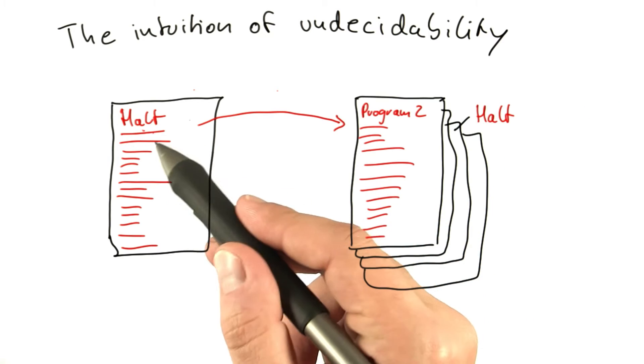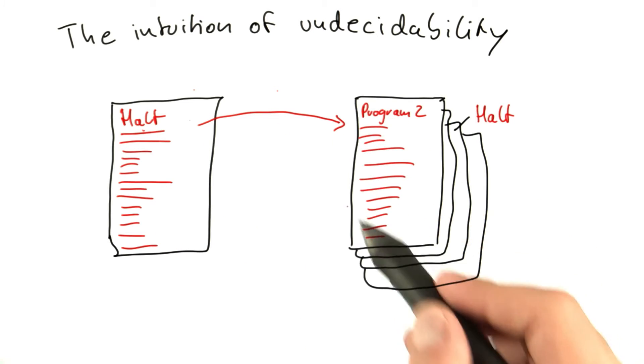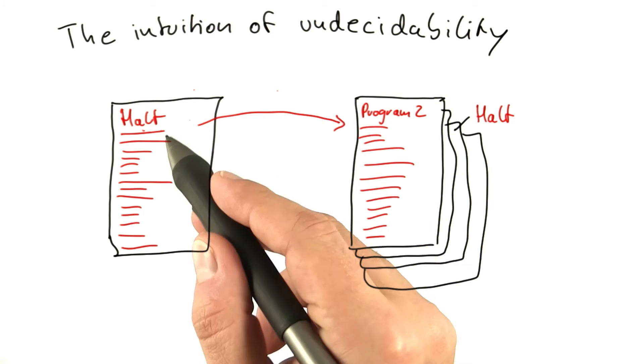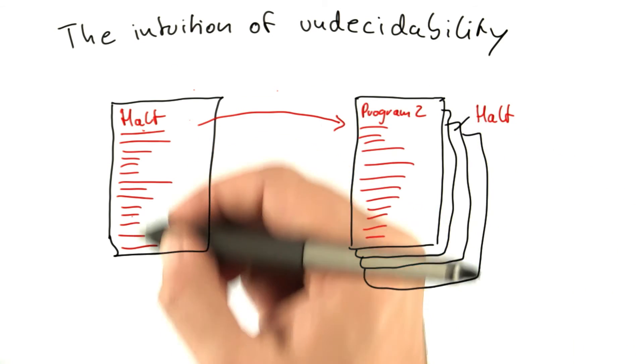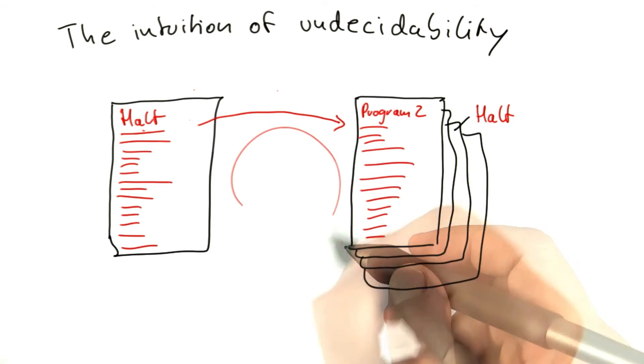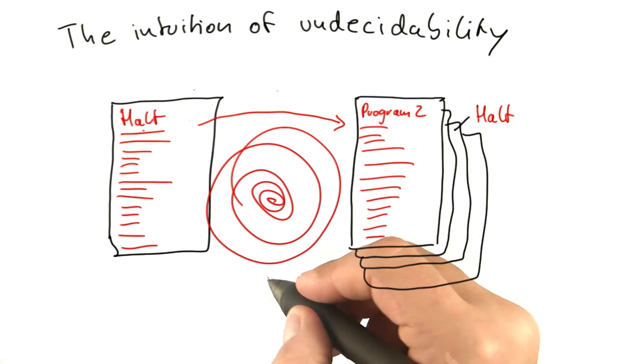Now if you say HALT must be more complex—and again this is not a scientific explanation—must be more complex than any program it's looking at, well, then HALT must be more complex than HALT itself, which of course leads to an infinite cycle of complexity. So here we kind of have this spiral of infinity, which of course cannot be.